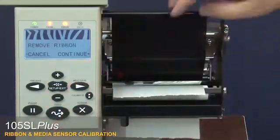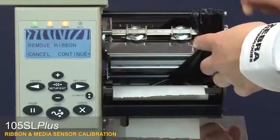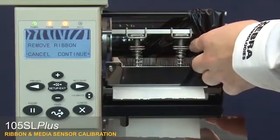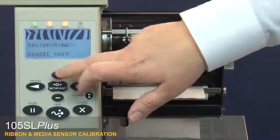The control panel will show remove ribbon. Move the ribbon to the side. Close the printhead. Press plus to begin calibrating the media.